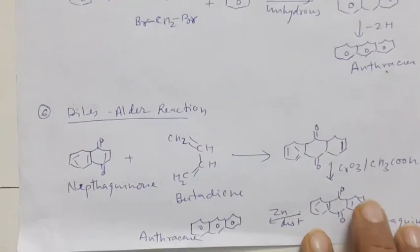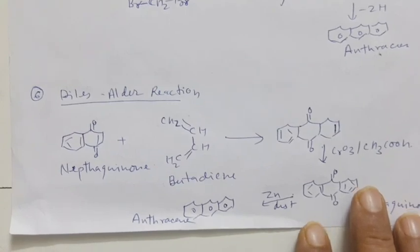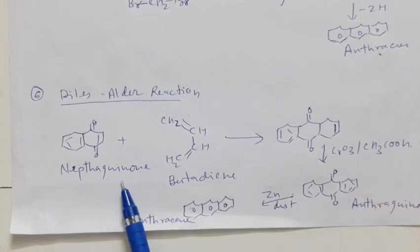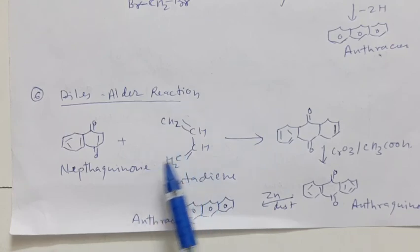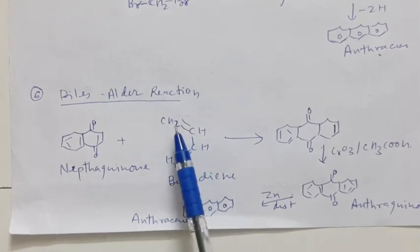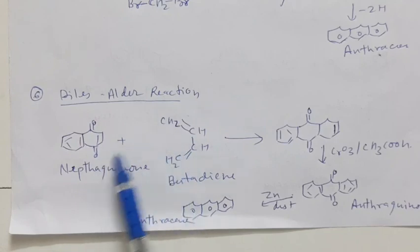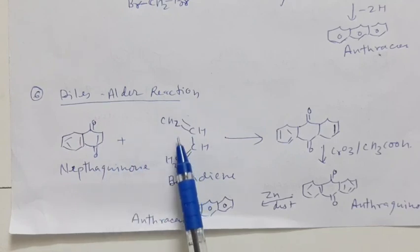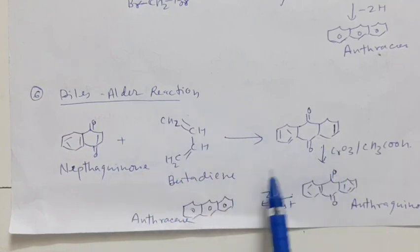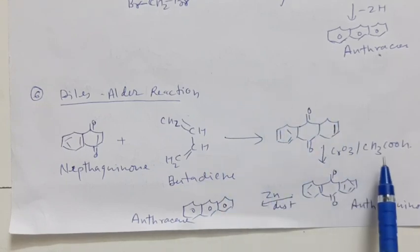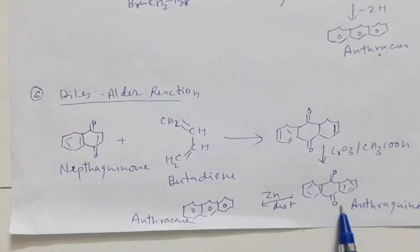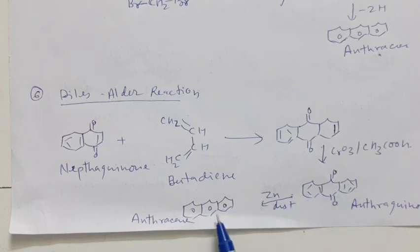The last synthesis is the Diels-Alder reaction, in which naphthaquinone reacts with butadiene. The terminal bonds shift and an addition reaction occurs, with terminal bonds shifting to the 2,3 position to give an addition compound. This on oxidation with chromic acid gives anthraquinone, and anthraquinone reacts with zinc dust to eliminate zinc oxide, forming anthracene.